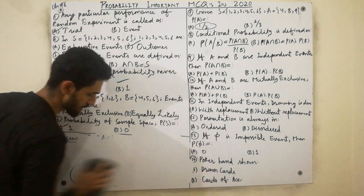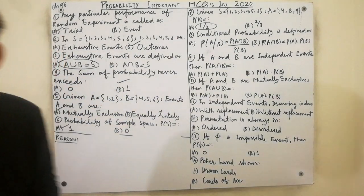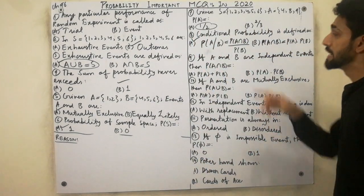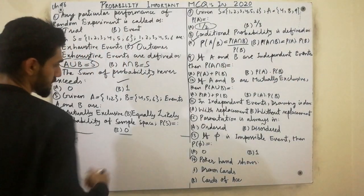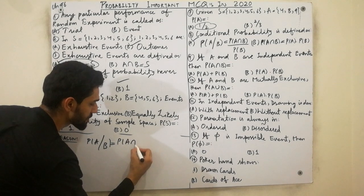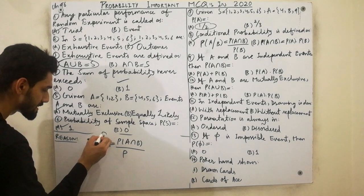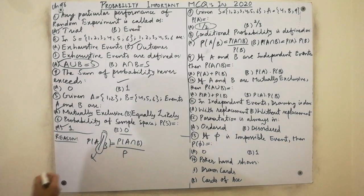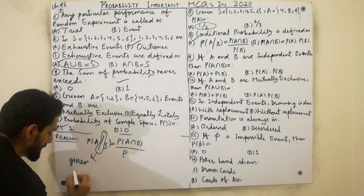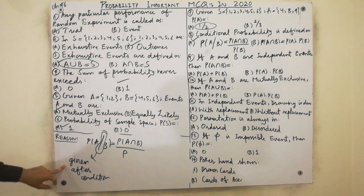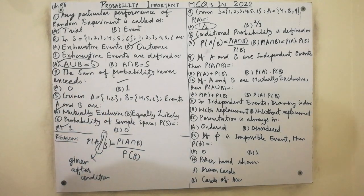MCQ eight: conditional probability. Conditional probability is defined as P(A|B) = P(A intersection B) divided by P(B). Must remember the key point: the vertical bar '|' means 'given' — given the condition. Here the condition given is B. So the denominator is P(B). This is called conditional probability.